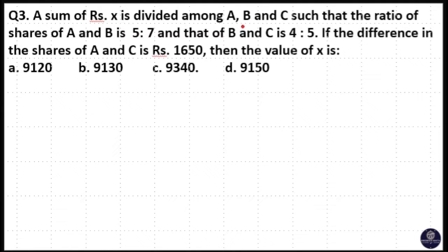A sum of rupees X is divided among A, B and C such that the ratio of shares of A and B is 5:7 and B and C is 4:5. If the difference in shares of A and C is rupees 1650, then the value of X is: